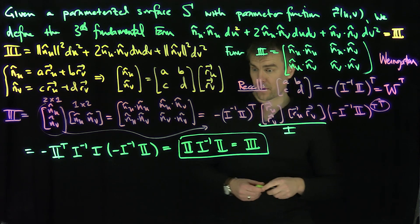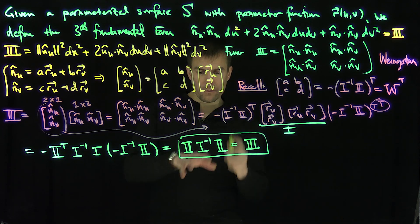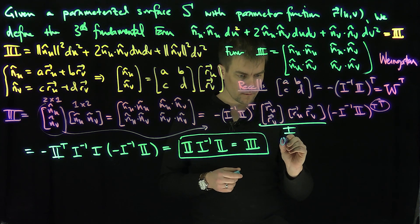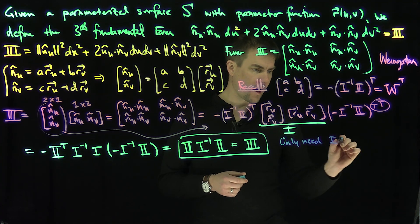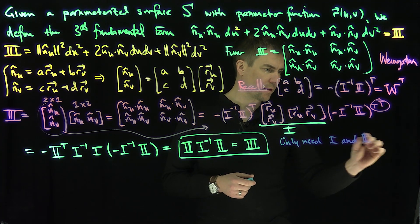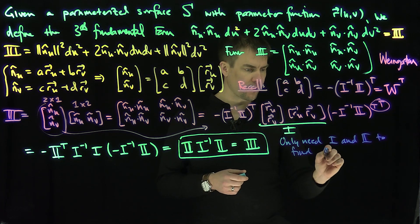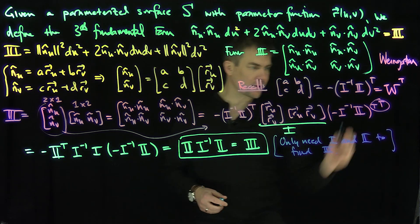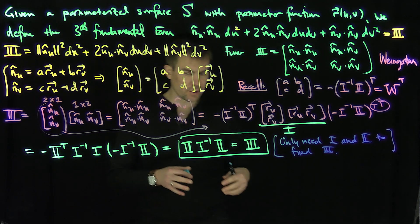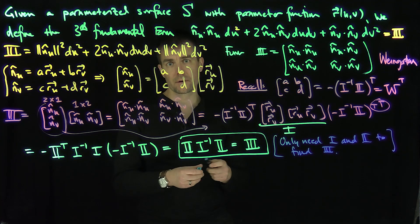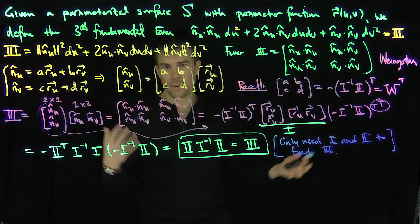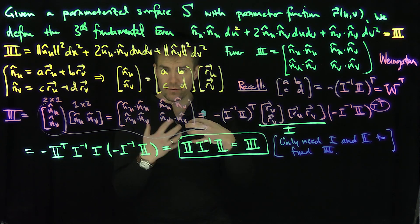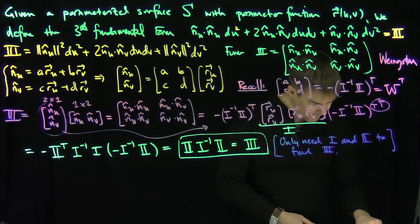So that's our first relation for the third fundamental form. In other words, we only need the first and second fundamental forms to compute the third fundamental form. We only need I and II to find III. That's a very useful result — it's one example in differential geometry where a higher-order form is fully determined by lower-order ones.